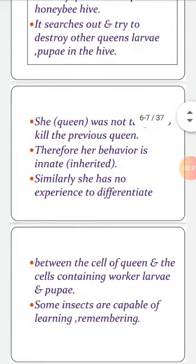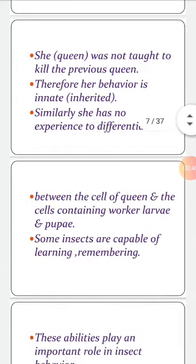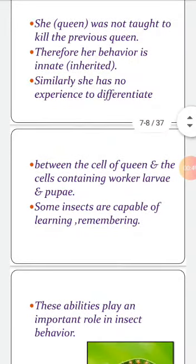Similarly, she has no experience to differentiate between the cell of a queen and the cells containing worker larvae and pupae. Some insects are capable of learning and remembering things, as bees visit flowers and remember their scent and aroma. Thus, these abilities play a very important role in shaping insect behaviour.